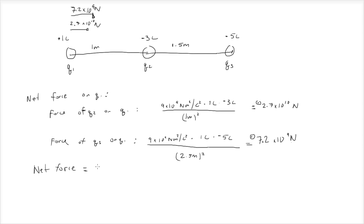So I'll just get 2.7 times 10 to the 10 newtons plus 7.2 times 10 to the 9 newtons, and that'll give you 3.42 times 10 to the 10 newtons.